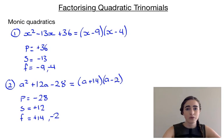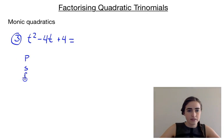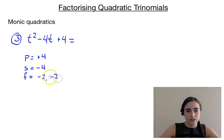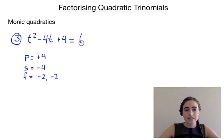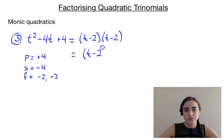Let's have a look at another example of monic quadratics. Our last example is t squared minus 4t plus 4. Using PSF, our product will be positive 4, our sum will be negative 4, and our factors that make that true are minus 2 and minus 2. They multiply to give positive 4 and add to give minus 4. So it factorises to (t minus 2)(t minus 2). Because both brackets are the same, we can simplify and write it as (t minus 2) squared.